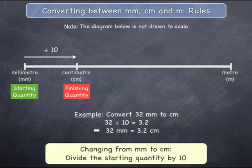If you are changing a quantity from millimetres to centimetres, you must divide the starting quantity by ten to get an equivalent quantity in centimetres, as the example shows.